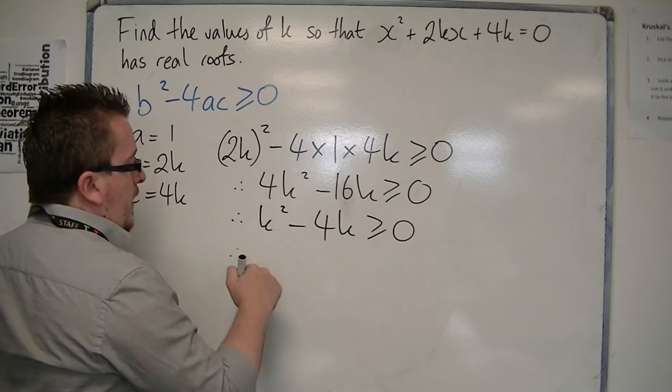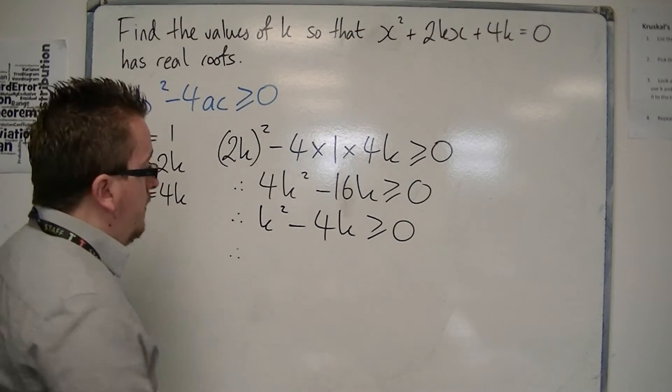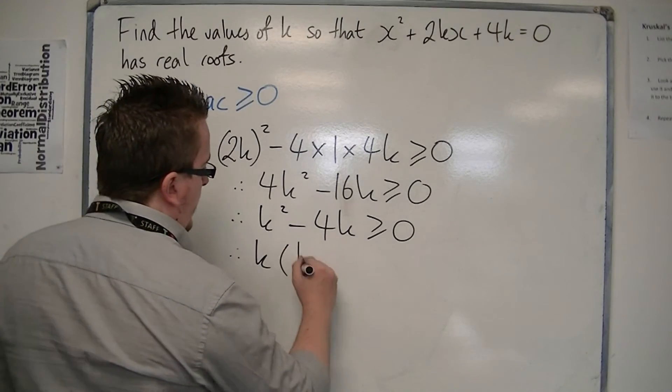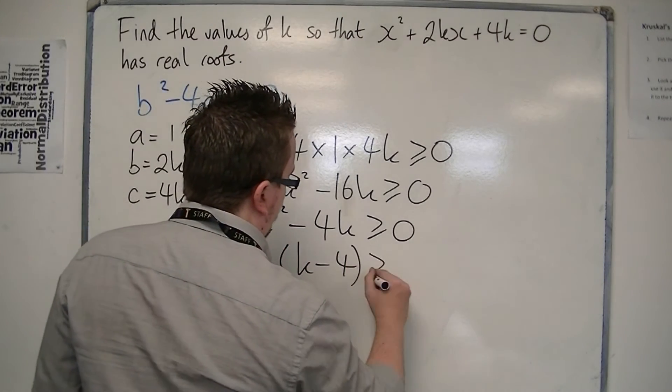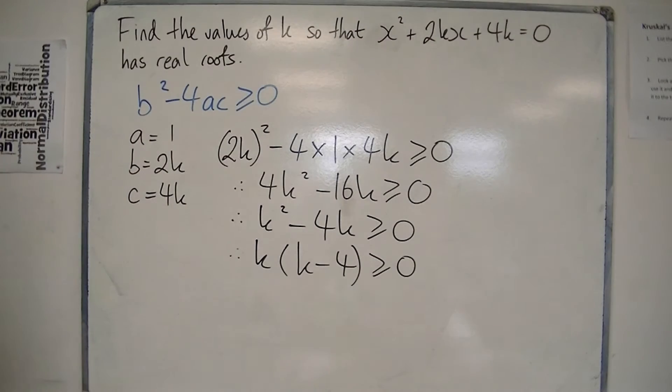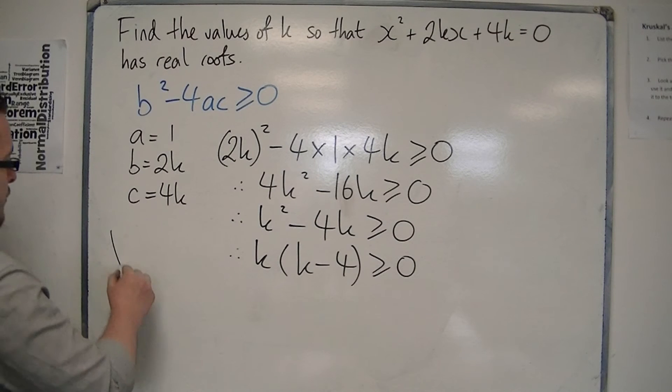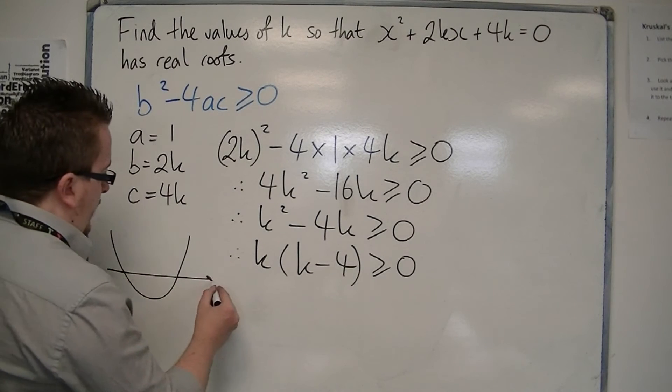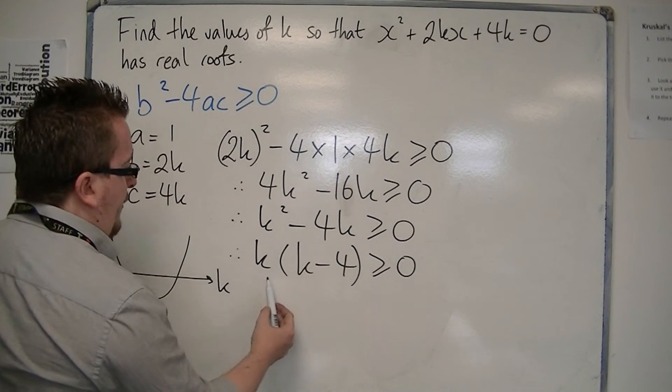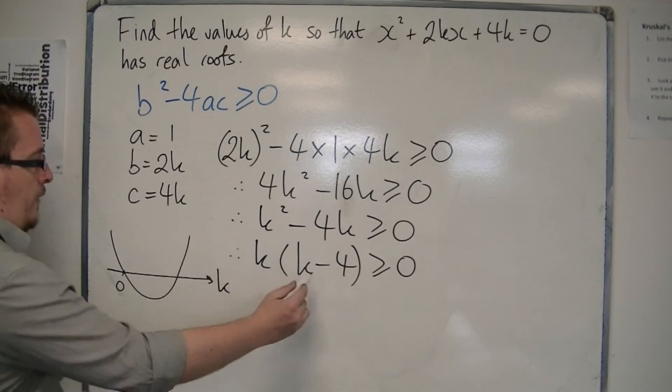So, I can factorise that with one bracket. So, in actual fact, what we're doing is we've got, looking at a parabola that is positive, because the coefficient of k squared is positive, that intersects the k axis at 0 and 4.